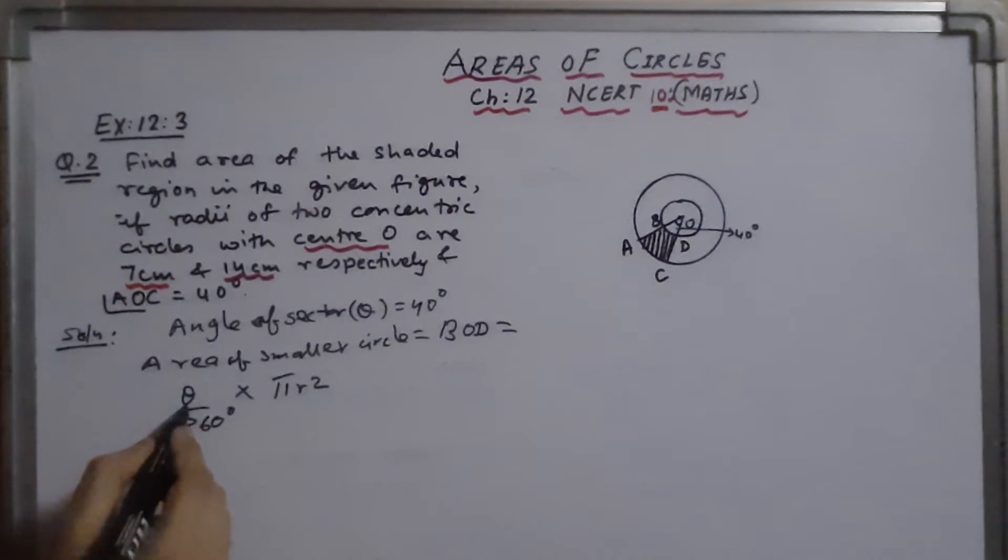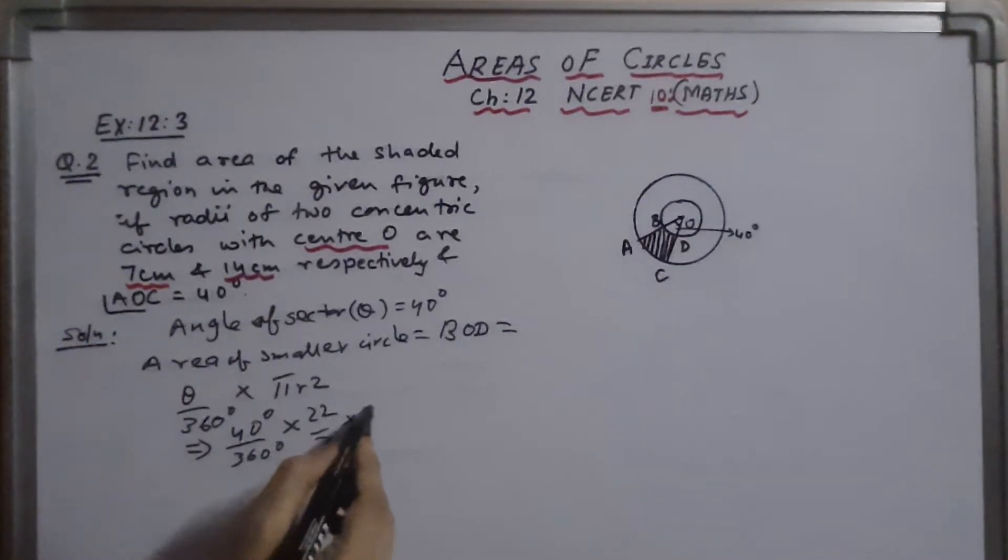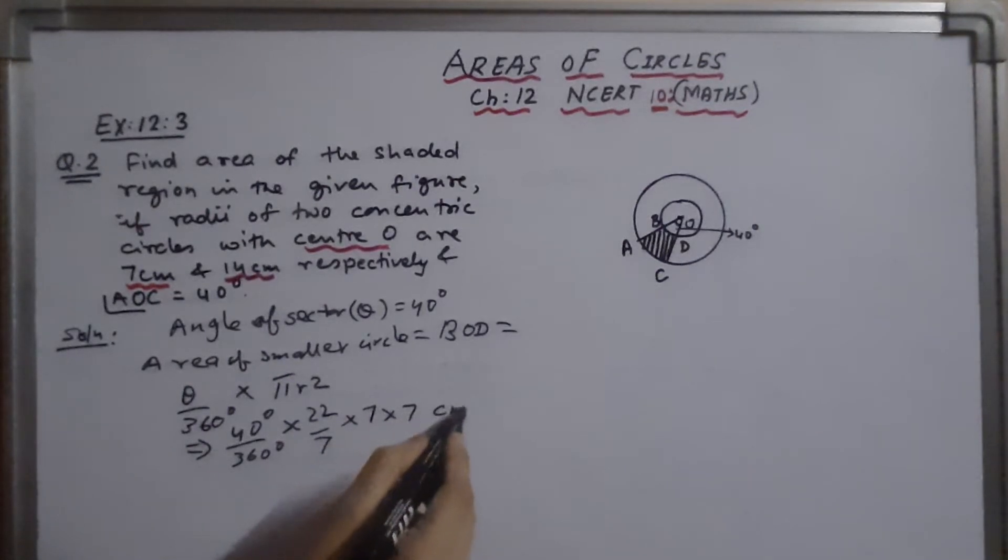So putting the value of theta, theta is 40 degrees. This implies 40 degrees upon 360 degrees into pi. I am taking 22 by 7 into first radius is 7. So 7 into 7 cm square.